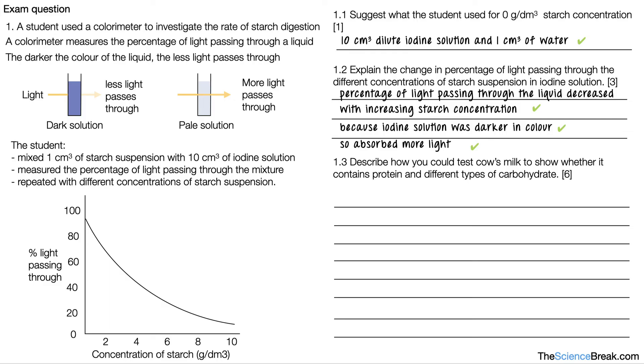And for 1.3, a very common question, a six-marker describing how you could do the different food tests. In this case, it's asking you to apply it to a test on cow's milk. So we're testing for protein and the different types of carbohydrate, not for lipids.